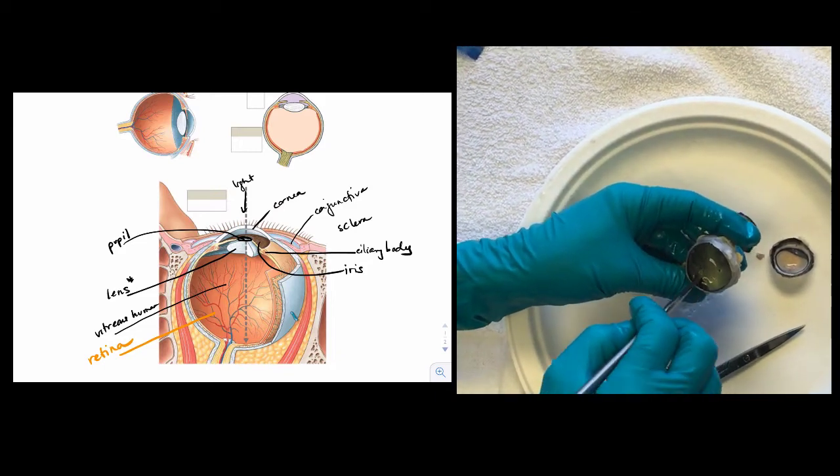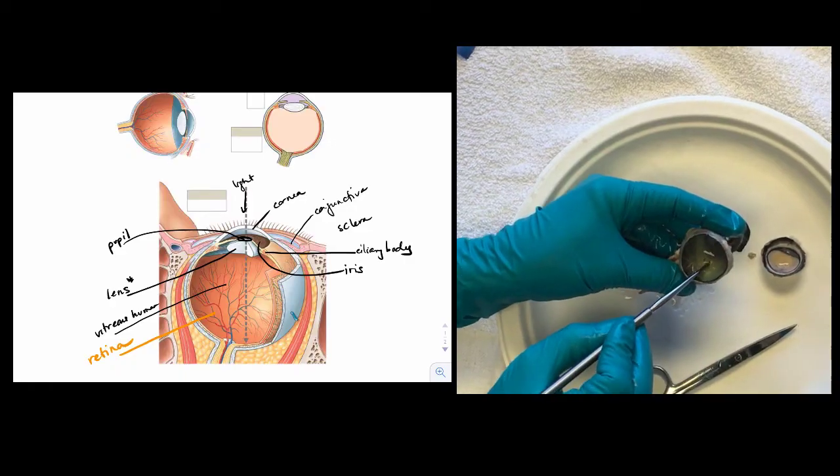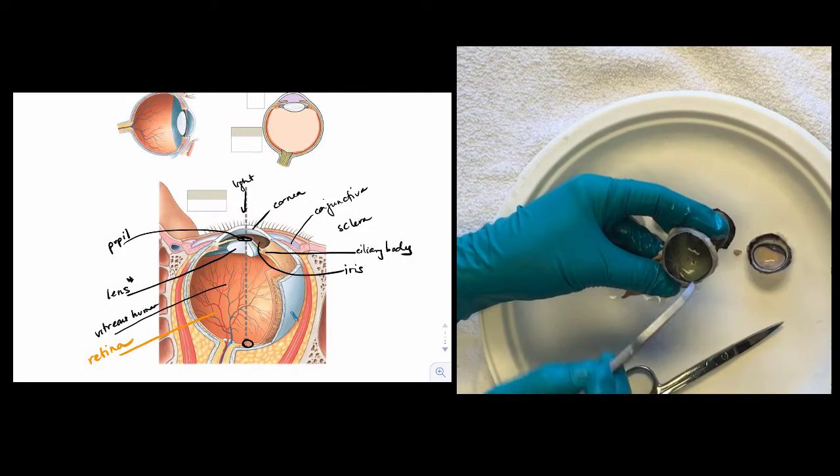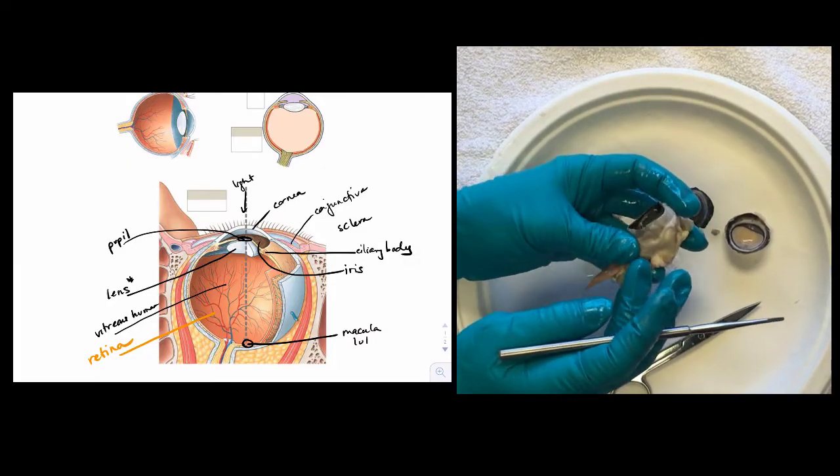The retina contains the photoreceptors, which are sensitive to light. It's a very thin layer on the back of the eye. The central collection of photoreceptors is the macula lutea with the fovea.